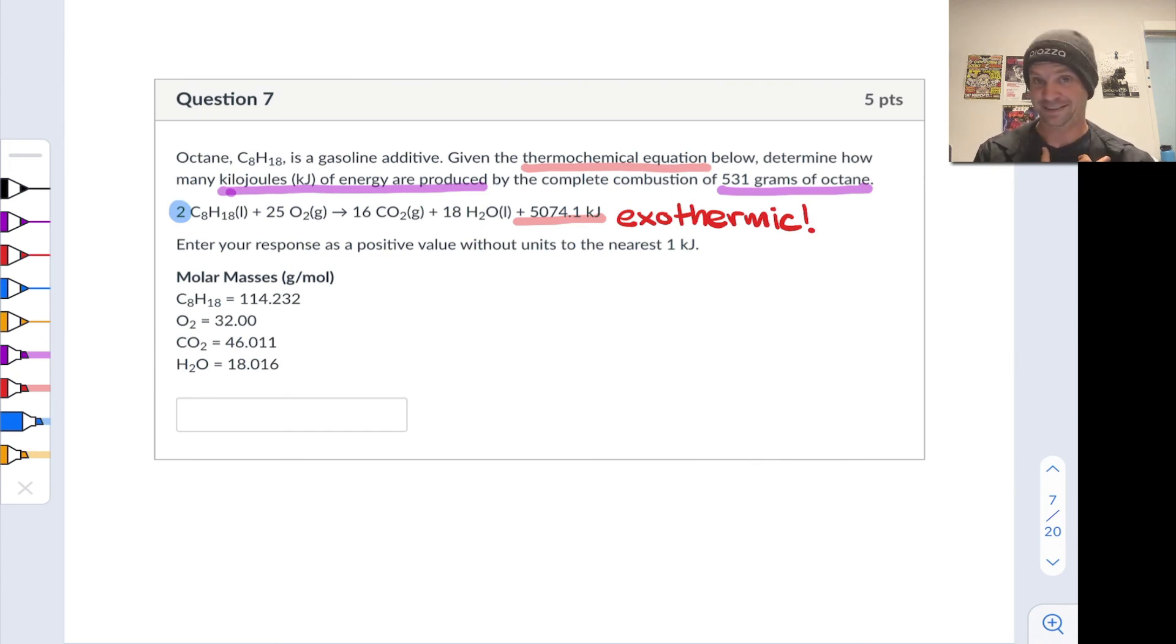We can use that like a molar ratio—this is the beauty of thermochemical equations. Now I can set up a molar ratio with this quantity of heat in the numerator and two moles of octane—and moles is actually worth writing here. Thermochemical equations are on the molar scale. This is a molar ratio I can now use in calculations.